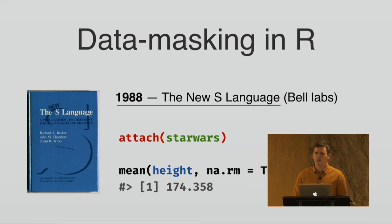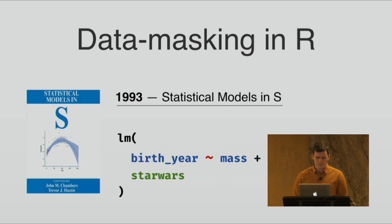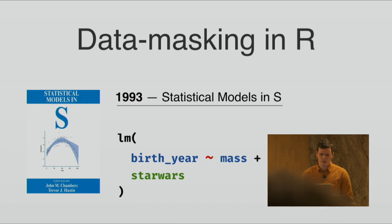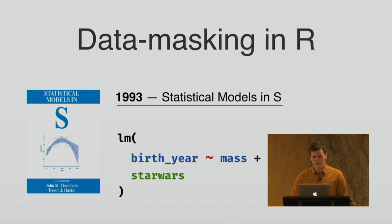Attach is not a recommended way of working with data now. But a few years later, the White Book was published, and it was about all of the statistical modeling functions that we still use in R now — like the LM function — and the way that works is that they took a data frame and a formula. And in the formula, you have data masking; you can refer to your columns directly.